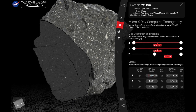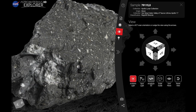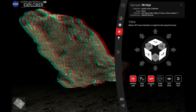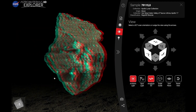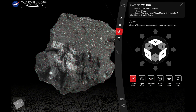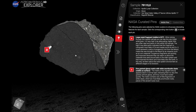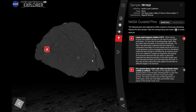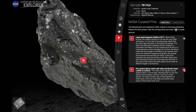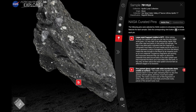If you have anaglyph glasses, you can also view the rock in real 3D space too. The NASA pins section shows you regions of interest, like this bright spot showing a large fragment of metal, or the rock's fine-grained glassy matrix filled with anorthosite clasps.